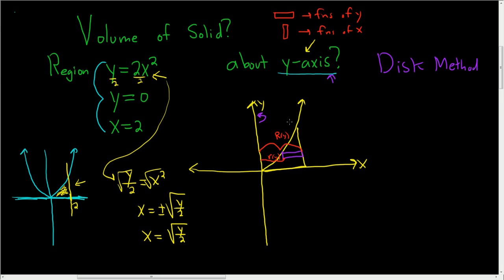All right, that means that this line here, this little distance here, is x equals the square root of y over 2. So that's going to be our little r of y. So little r of y is the square root of y over 2.